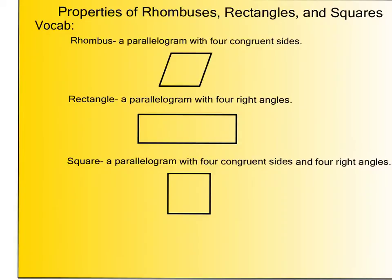So when we begin this section, we first need to make sure that we have some vocab down. We have three words to focus on right now: rhombuses, rectangles, and squares. A rhombus is a parallelogram with four congruent sides. We denote four congruent sides by having our tick marks on our parallelogram. A rectangle is a parallelogram with four right angles. We see these right angle boxes. A square is a parallelogram with four congruent sides and four congruent right angles.